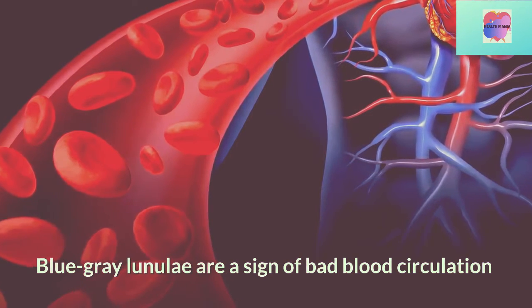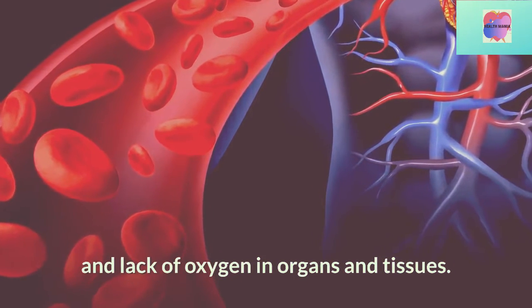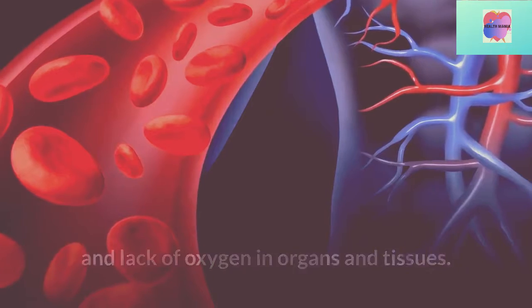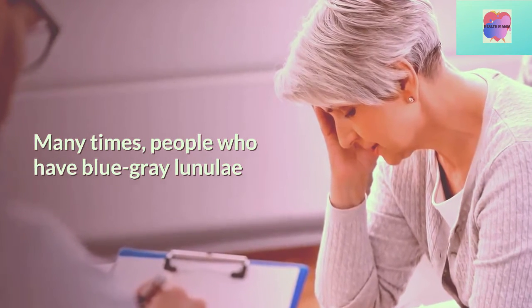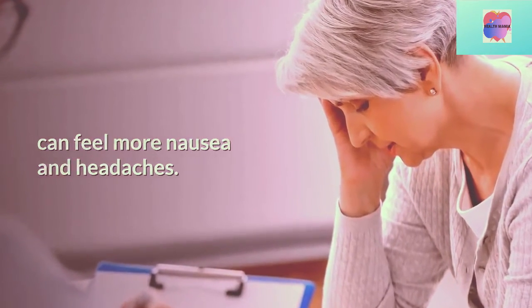Blue-gray lunulae are a sign of bad blood circulation and lack of oxygen in organs and tissues. Many times, people who have blue-gray lunulae can feel more nausea and headaches.